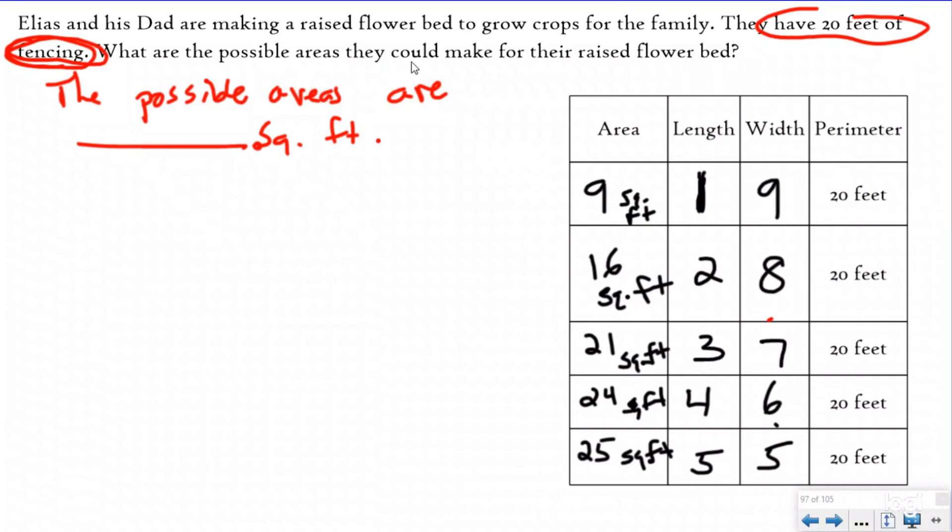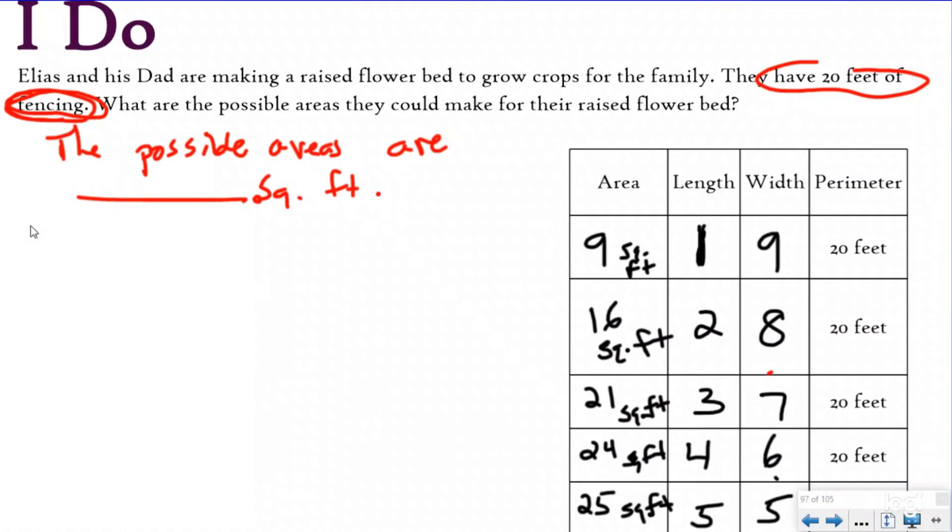So the possible areas they could make for their raised flower bed: they could have a 9 square foot area, a 16 square foot area, a 21 square foot area, a 24 square foot area, or 25 square feet. Some of you are saying, why does this even matter? Well, if you're trying to make the biggest flower bed you can, you want the biggest area - the one with the most square feet, because that's going to give you the most room to grow the most amount of plants.